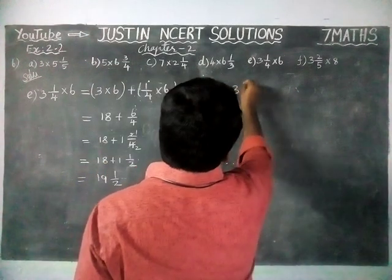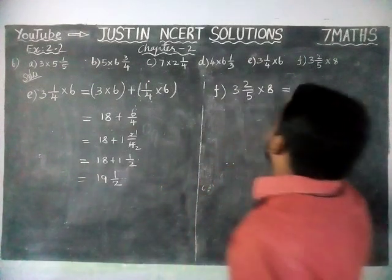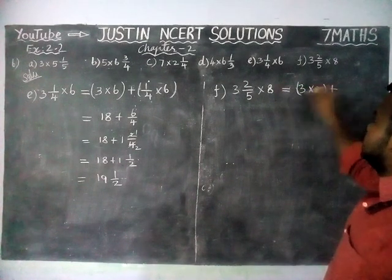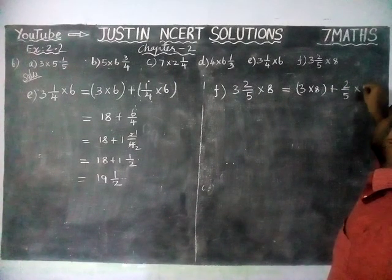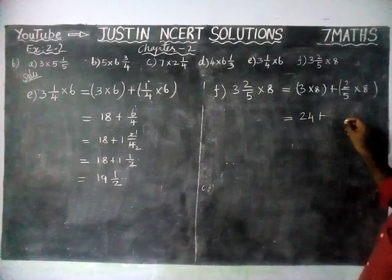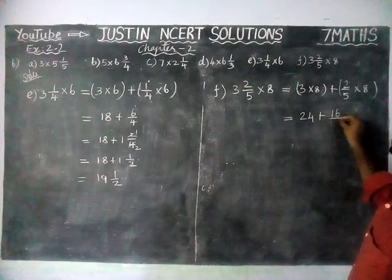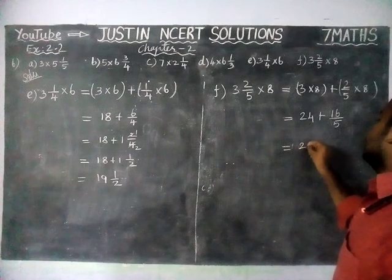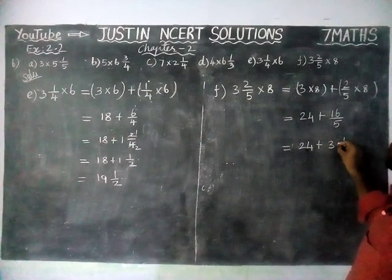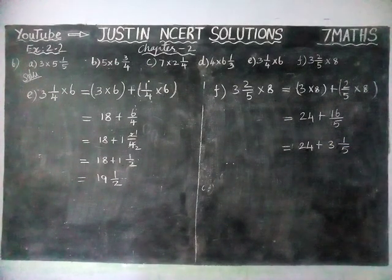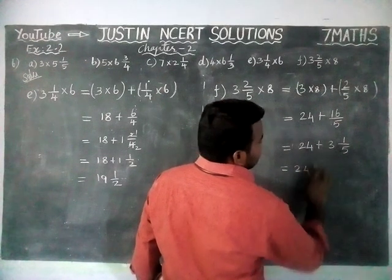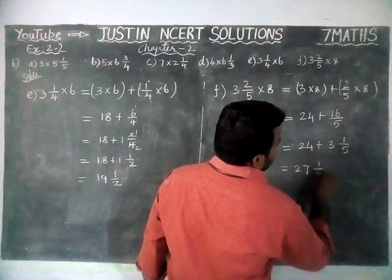Option F: 3⅖ into 8 is equal to. The same method, we have to multiply the whole part first: 3 into 8 plus 2 by 5 into 8 is equal to. 8 threes are 24 plus 8 twos are 16 divided by 5. So 24 plus, in 16 we have 3 fives, 3 fives are 15, and the remainder is 1, so 3 and 1 by 5. Now we add the whole part: 24 plus 3 is 27, giving us 27 and 1 by 5.